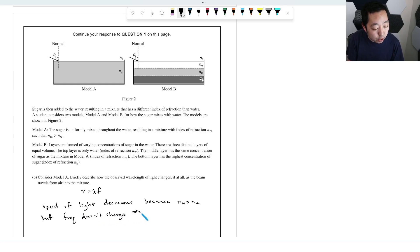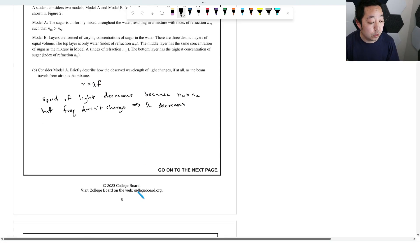But frequency F doesn't change. And so by this formula, that implies the wavelength decreases. Because the frequency doesn't change when it enters, but the speed of light decreases, so the wavelength therefore decreases.